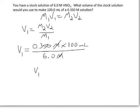And so when I multiply and divide all of that out to the correct number of significant figures, I get 5.8 milliliters. So what I would do is take 5.8 milliliters of the stock solution, put that in a 100 milliliter volumetric flask, and then add distilled water to the mark. And so I will end up with 100 milliliters of a 0.350 molar solution.